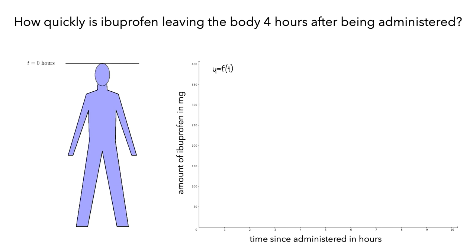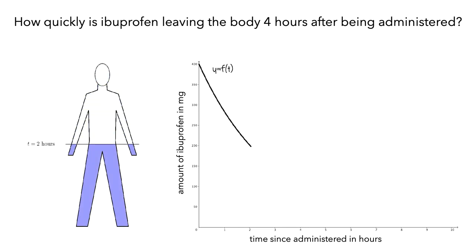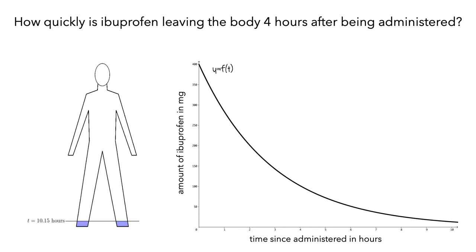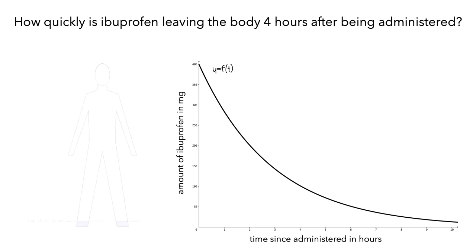Let's go back to the time the ibuprofen was taken and create the graph. We can approximate the instantaneous rate of change at t = 4 hours by using an average rate of change over a small interval. To see some smaller intervals, we'll zoom in on the graph.